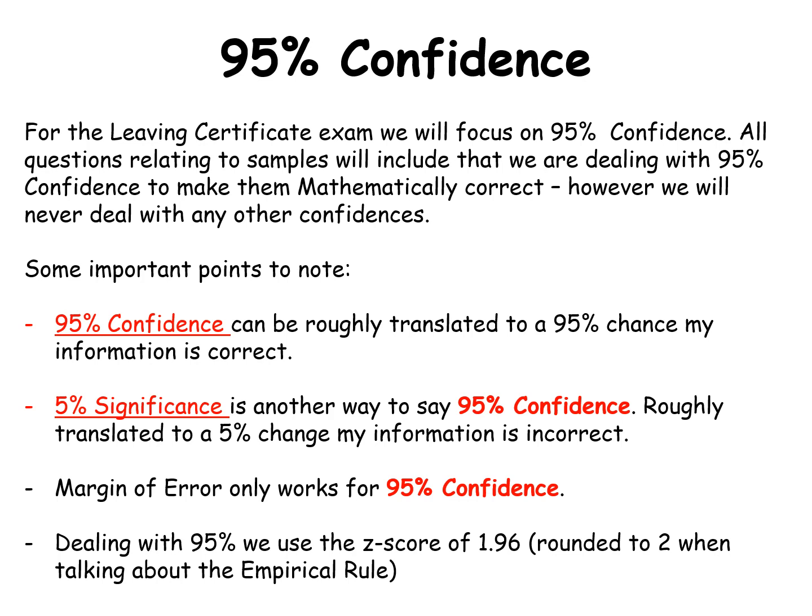Now these are not the mathematical definitions of 95% confidence. This is just a way to help you to grasp what's going on. So when we talk about 95% confidence, this can be very roughly translated as a 95% chance my information is correct. So 95% chance I'm correct. We then will see 5% significance. So this is just another way to say 95% confidence. And roughly translated, it means a 5% chance that my information is incorrect.